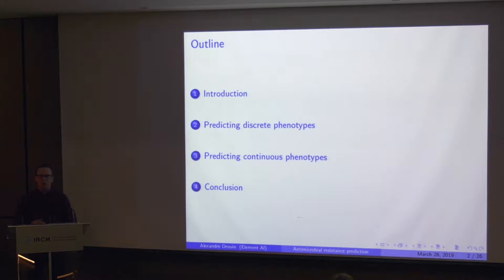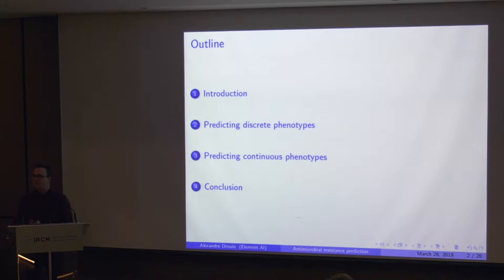This is an outline of my talk. I'll start by explaining what a genotype is and what a phenotype is. Then I'll spend most of my time talking about predicting discrete phenotypes — so resistant or susceptible to a given antibiotic. And then I will briefly cover predicting continuous phenotypes, specifically minimum inhibitory concentrations.